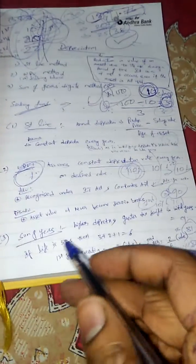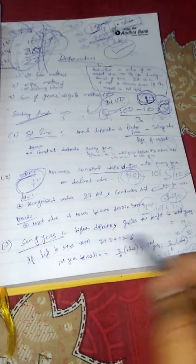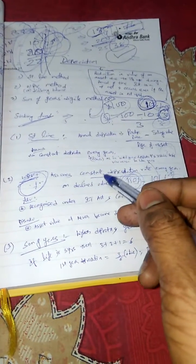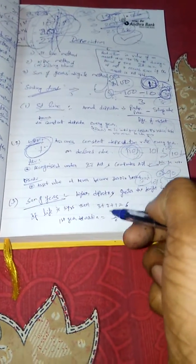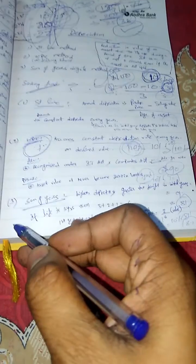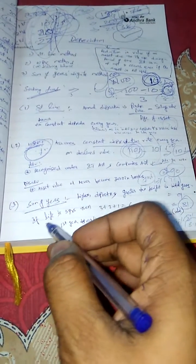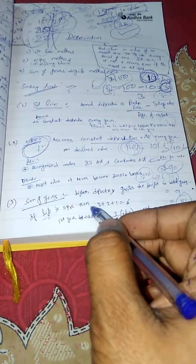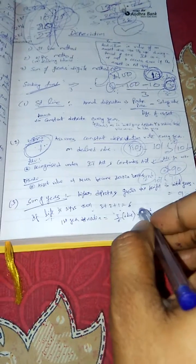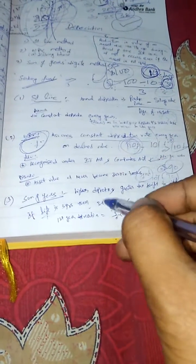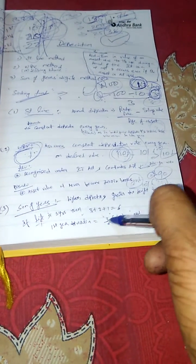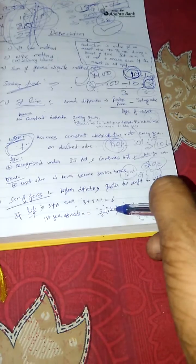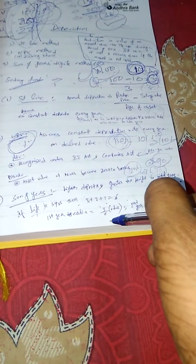Coming to the last method: sum of years digits method. Here, the percentage we assumed as 10% will vary. To calculate that rate of depreciation percentage — assume if the life of your asset is 3 years, then write numbers in reverse order: 3 plus 2 plus 1, that is total 6. So in first year, the depreciation amount will be 3 divided by 6 into that value — that is 3 divided by 6 is 1 by 2.